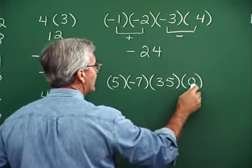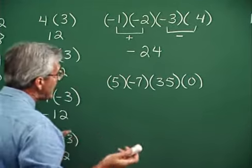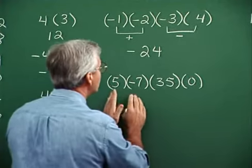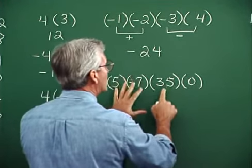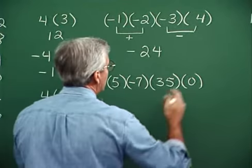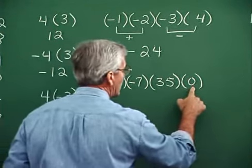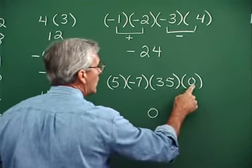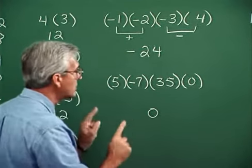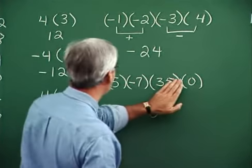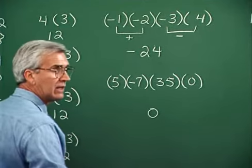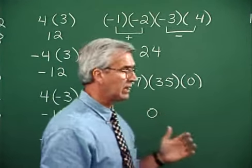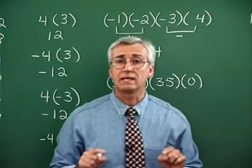Five times negative seven times thirty-five times zero: when zero is one of the factors in a string of factors, the answer is zero. Zero times anything is zero — if zero is just one of the factors, regardless of what the others look like, that answer is going to be zero.